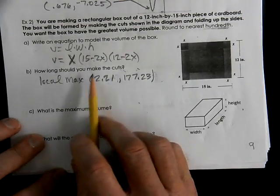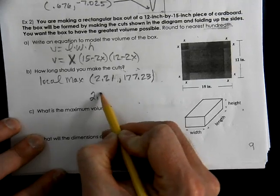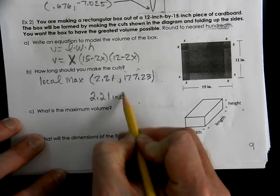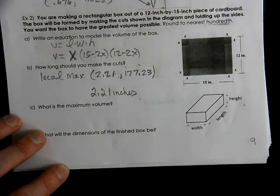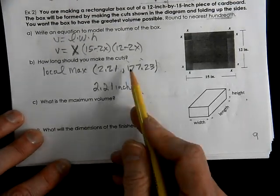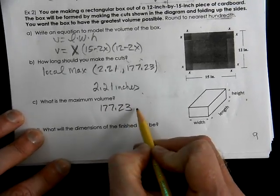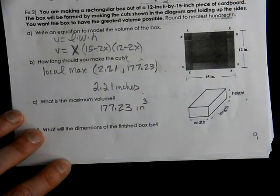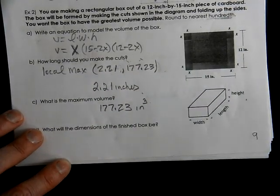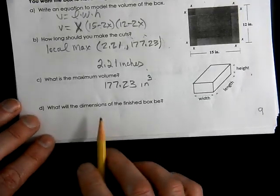So what should our cuts be? Our cuts should be 2.21 inches. That's our x value that maximized our volume. What is the maximum volume? 177.23 inches cubed. Cubic inches. Volume is length times width times height. Three dimensions.